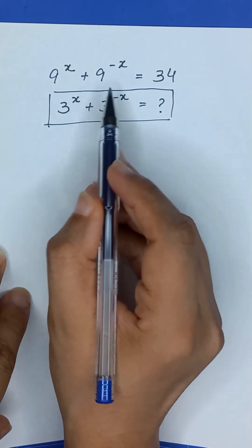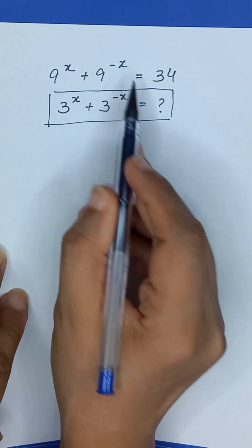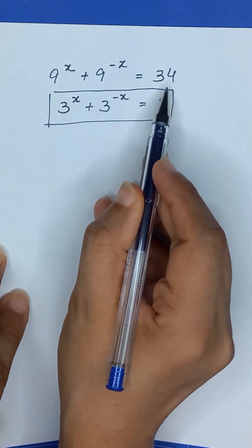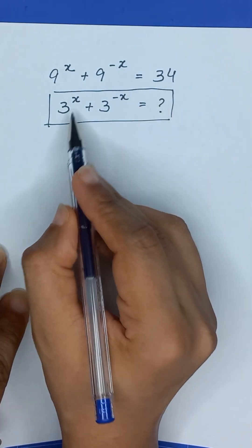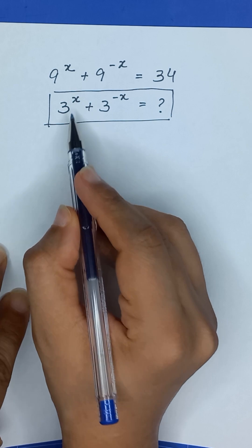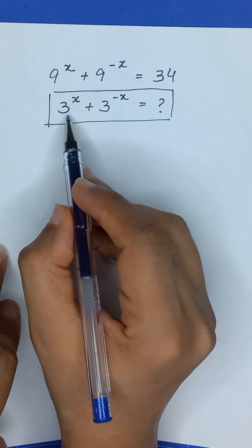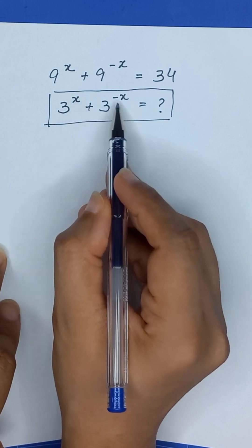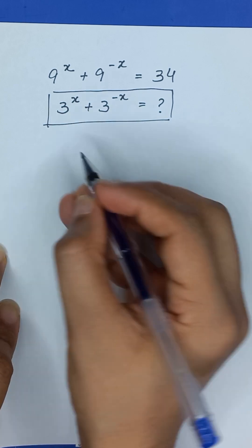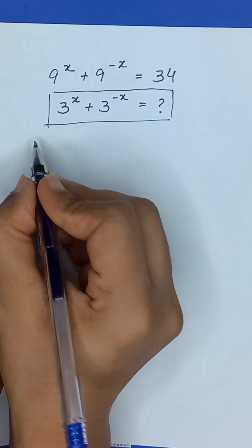9 to the power x plus 9 to the power minus x is equal to 34, and we have to find the value of 3 to the power x plus 3 to the power minus x.